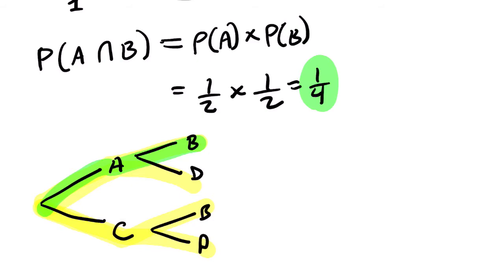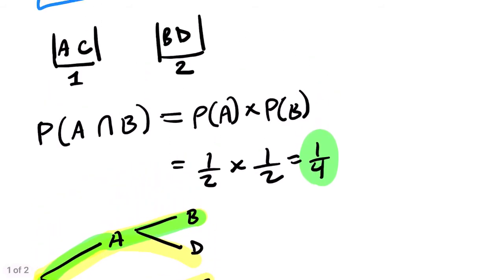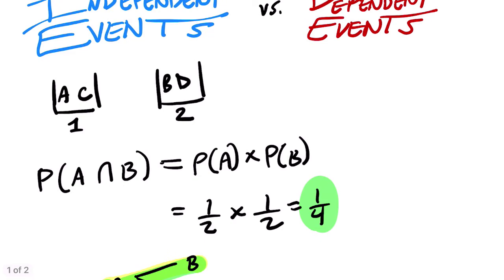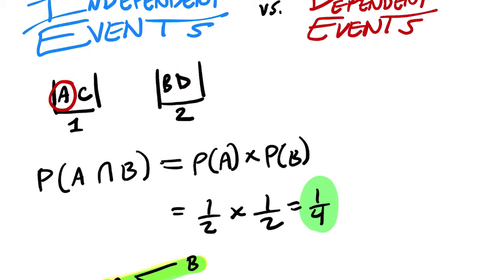We're able to do this because these are independent events. That means if I take out the A from the first bucket, it has no impact on the probability of getting a B in the second bucket. Whether I grab an A or not in the first bucket doesn't impact the second bucket. Because they don't impact each other, they are independent, and in that special case we can multiply their probabilities.